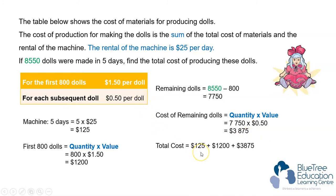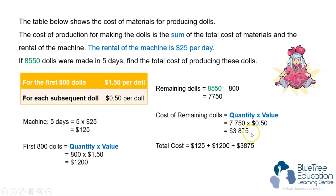To find the total cost, we will add up the price of the machine, the price for producing the first 800 dolls, and the price for producing the remaining dolls. The answer is $5,200.